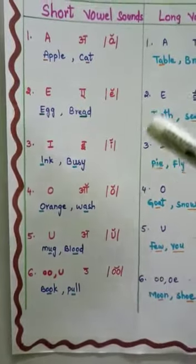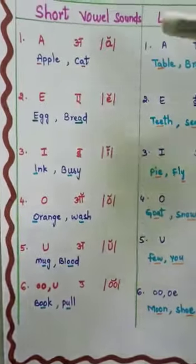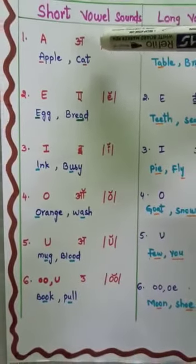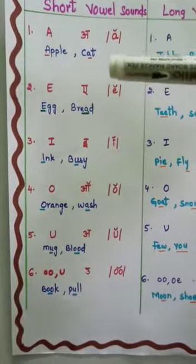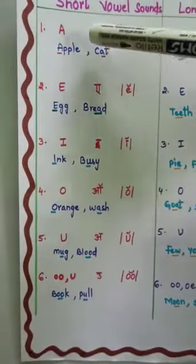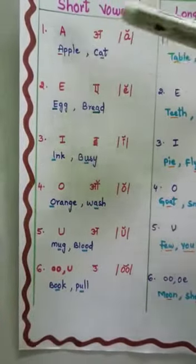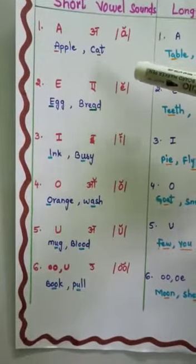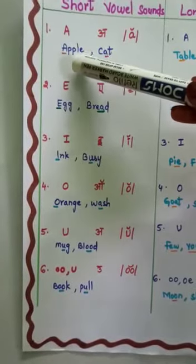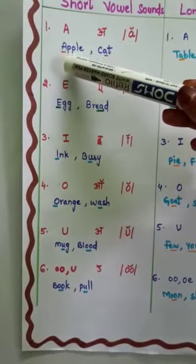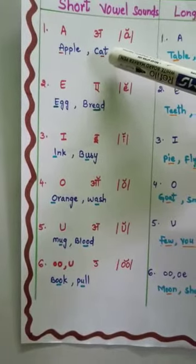Now let us see the first one. A makes the sound as /æ/. Short vowel sound: /æ/. Examples: apple and cat. Apple makes the sound /æ/ — apple. Cat makes the /æ/ sound — cat.